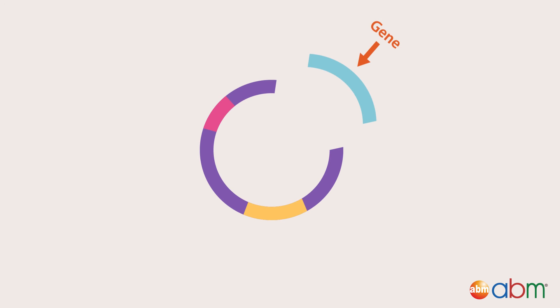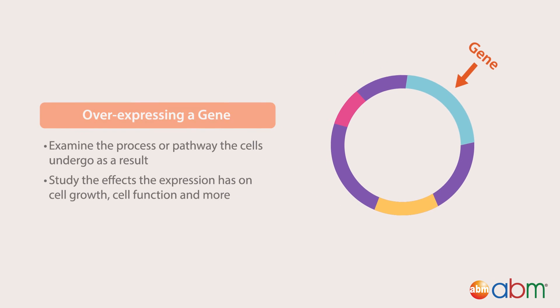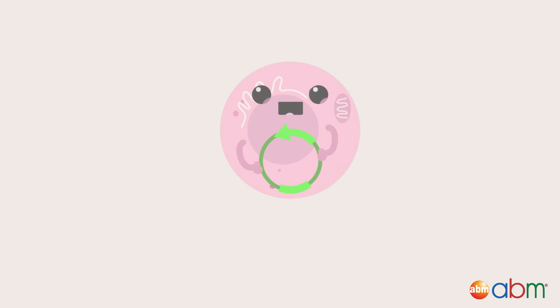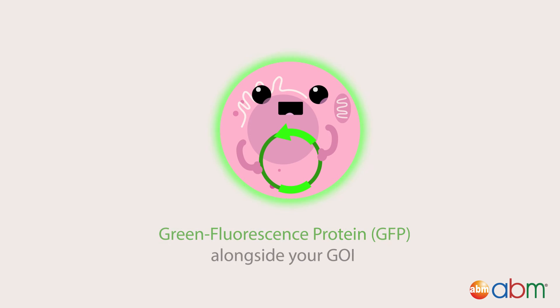Applications. Through the introduction of the plasmid carrying your gene of interest (GOI), over-expressing a gene allows us to examine the process or pathway the cells undergo as a result, and the effects the expression has on cell growth, cell functions, and more. You can manipulate the plasmid construct to express reporter genes such as green fluorescent protein (GFP), alongside your GOI to track the localization of the expression.